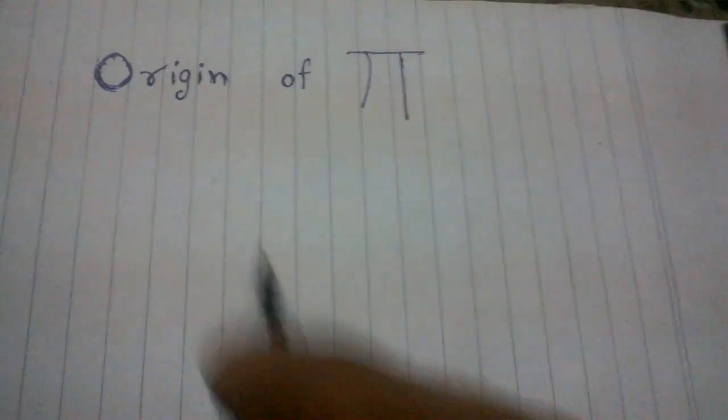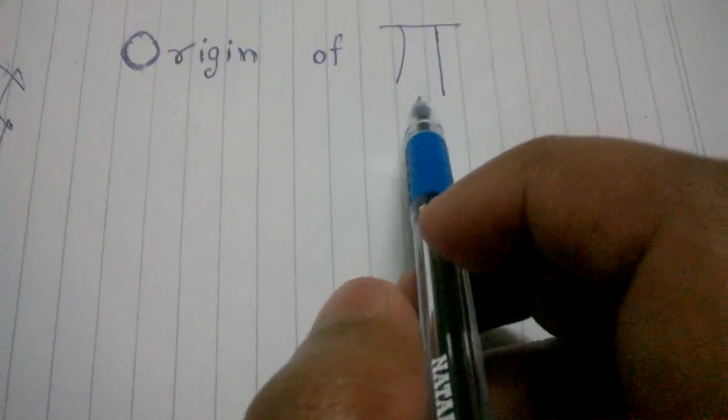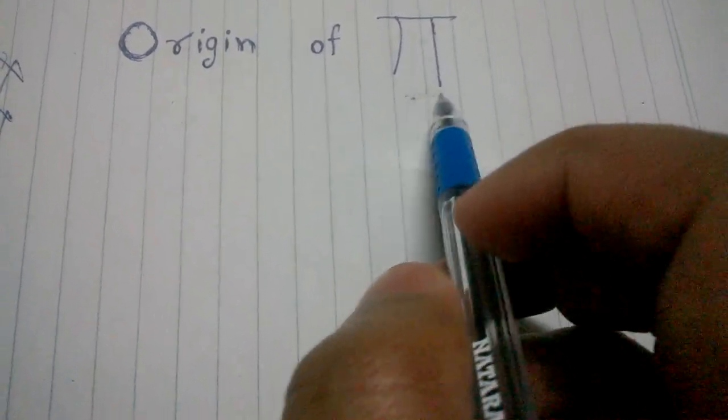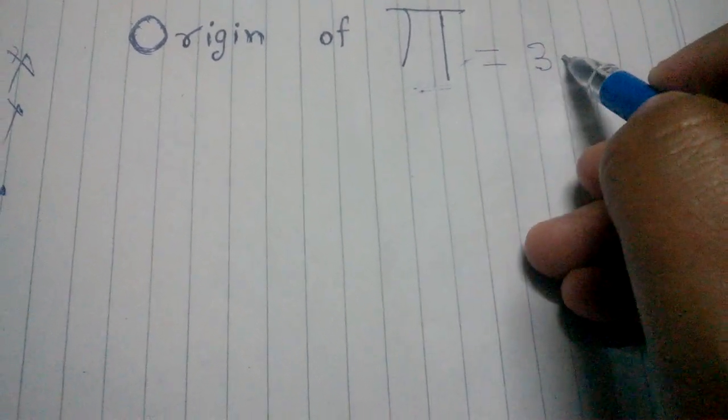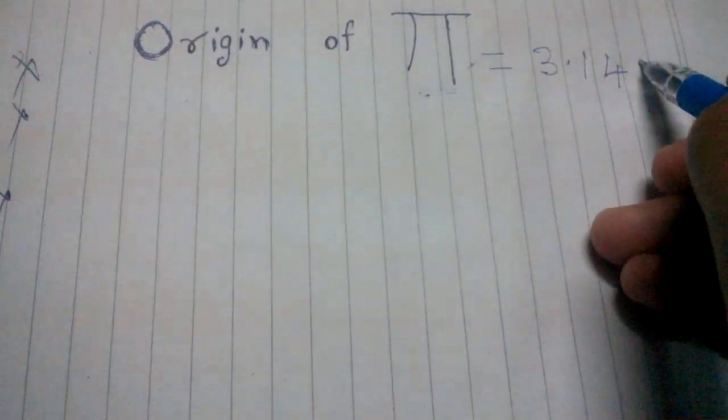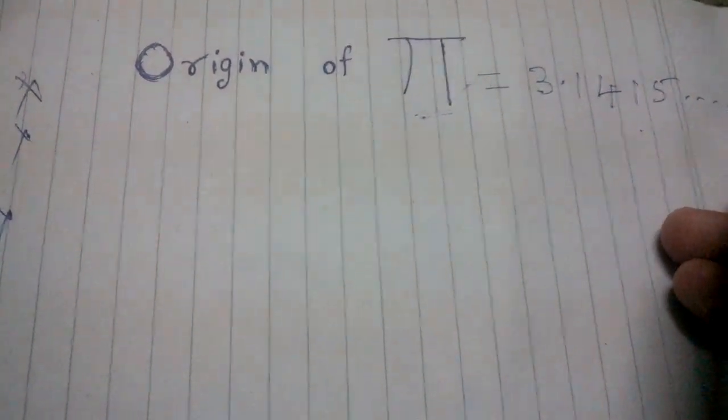Hey guys, welcome back. So let us now try to find the origin of this Greek notation pi. We all know the value of it—it is 3.1415 and it keeps on continuing. It is an irrational number.